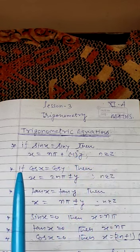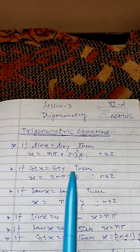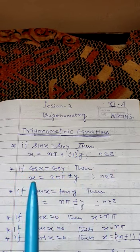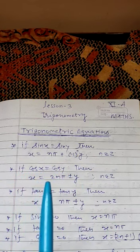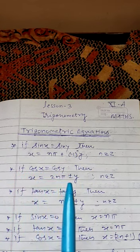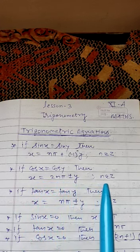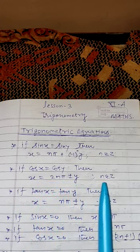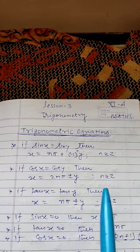Now second case: if cos x equals cos y, then the value of x is given by x equals 2nπ plus minus y, and here also n belongs to Z, where Z is any integer.